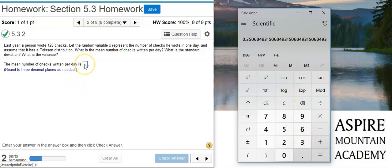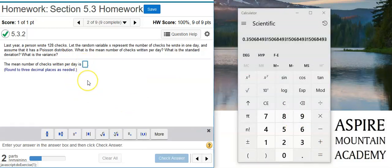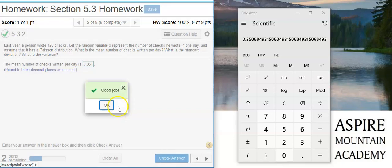So there's the mean number of checks written per day, and I'm asked to round to three decimal places. Good job!